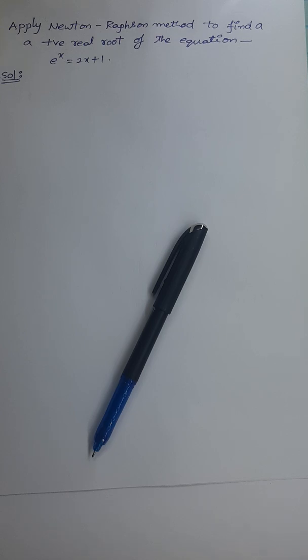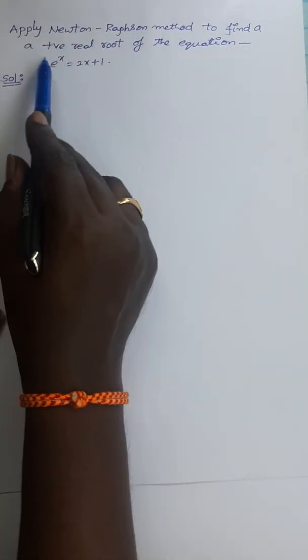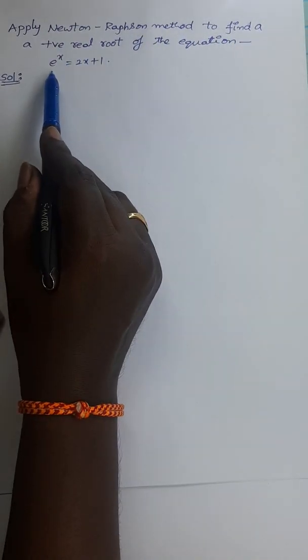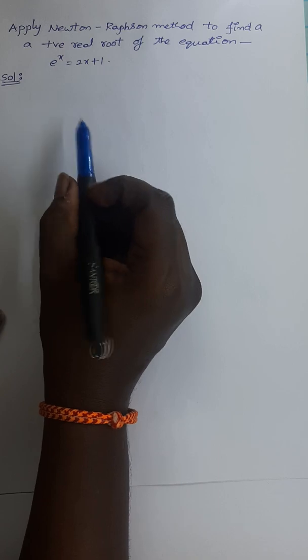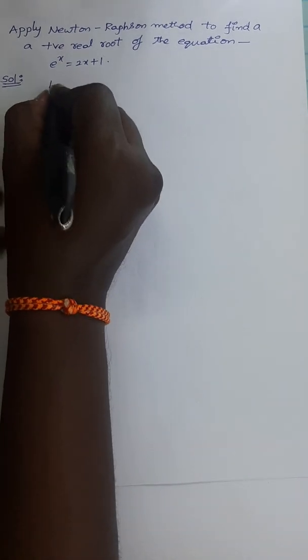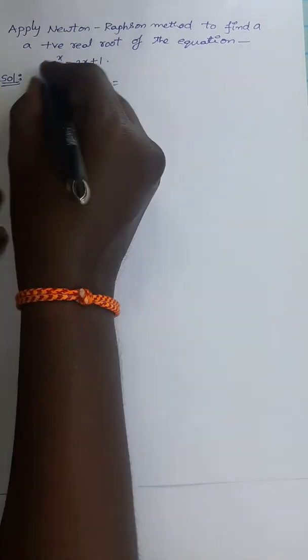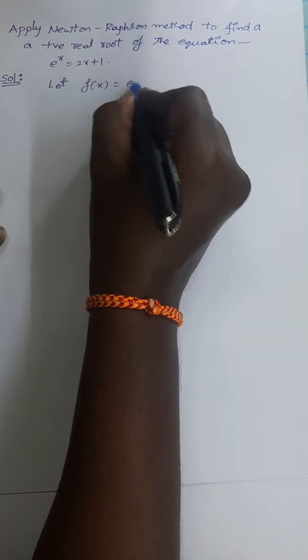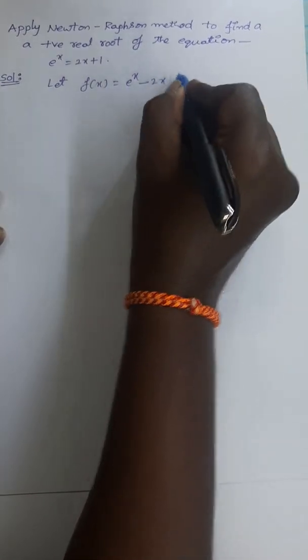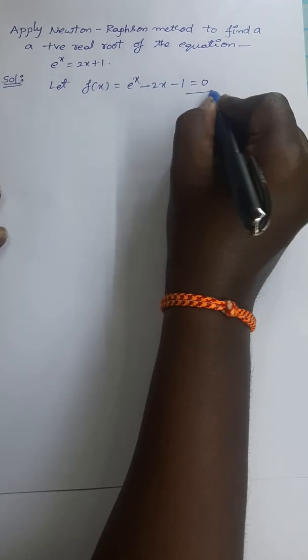Welcome back to our channel. In this video, I will give another problem on the Newton-Raphson method. The problem statement is: apply the Newton-Raphson method to find a positive root of the equation e^x = 2x + 1. Let us take the given equation as f(x), so it can be written as f(x) = e^x - 2x - 1 = 0.